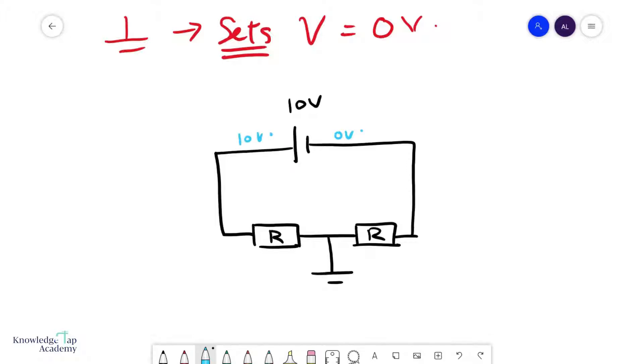And then over here would be 10 volts. Due to the symmetry of this circuit, you would dissipate 5V here and 5V there, so the potential here would be 5 volts and then zero volts.